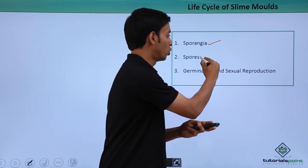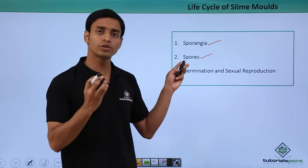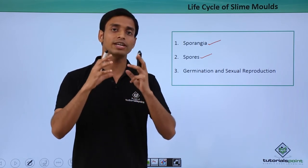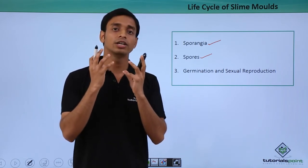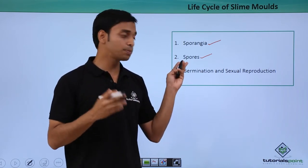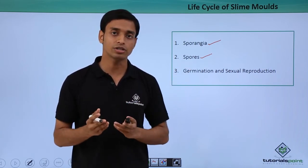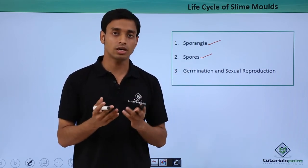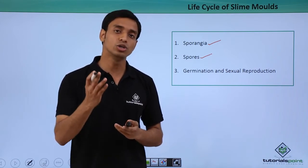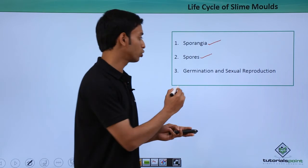Next is by the formation of spores. This is a common method. Spores are very hard, resistant structures with a thick covering. These spores are formed under unfavorable conditions, and when favorable conditions return, they can germinate into a new organism.